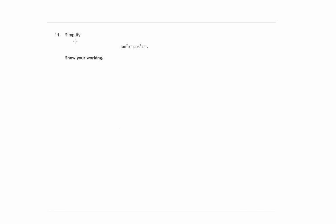So here we have a simplification problem: tan squared x degrees times cos squared x degrees. We need to simplify that, showing all our working. There are two formulas that you usually need.